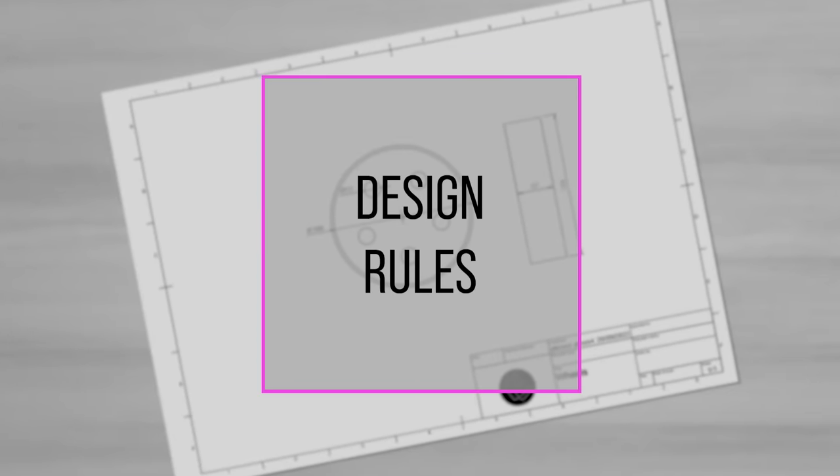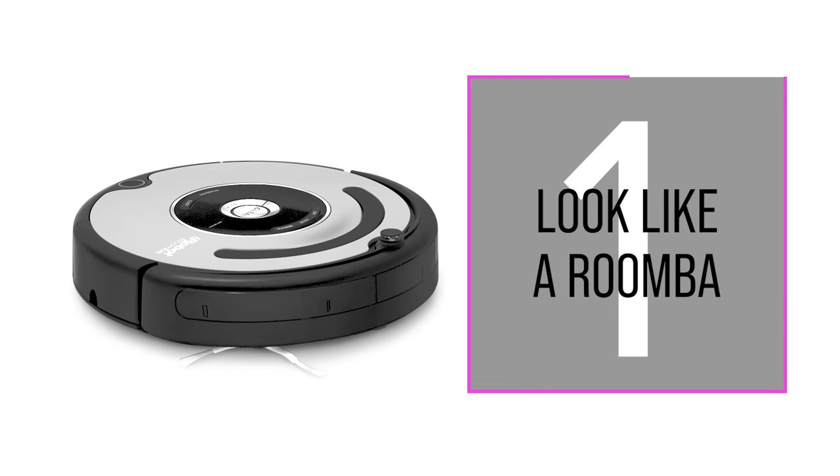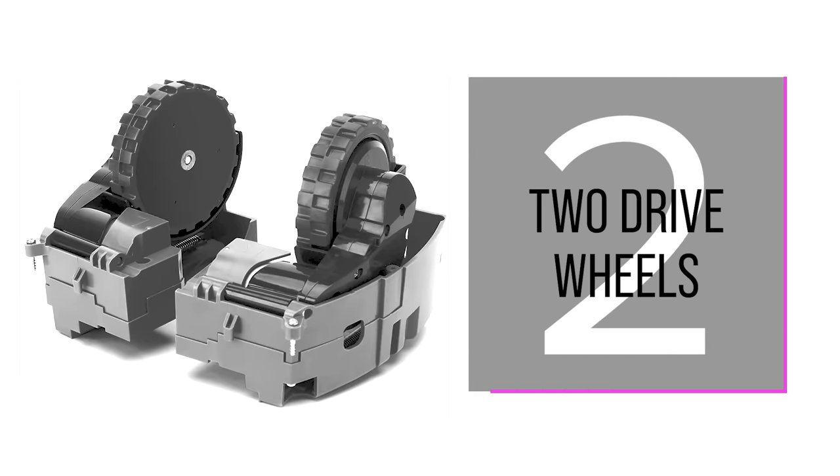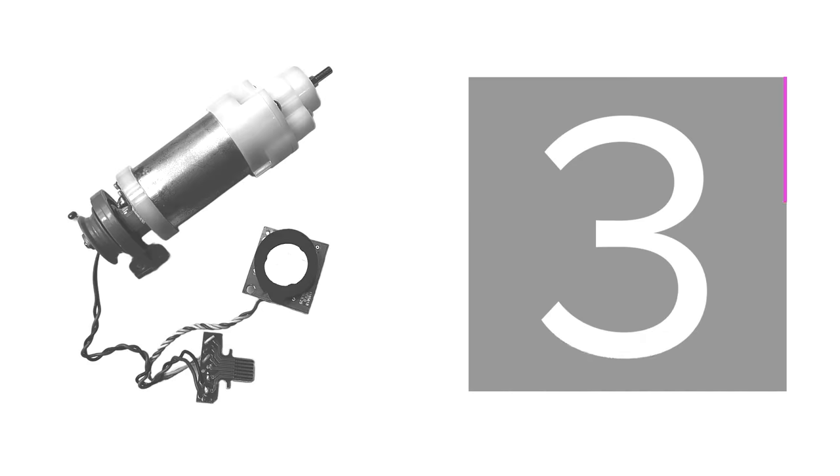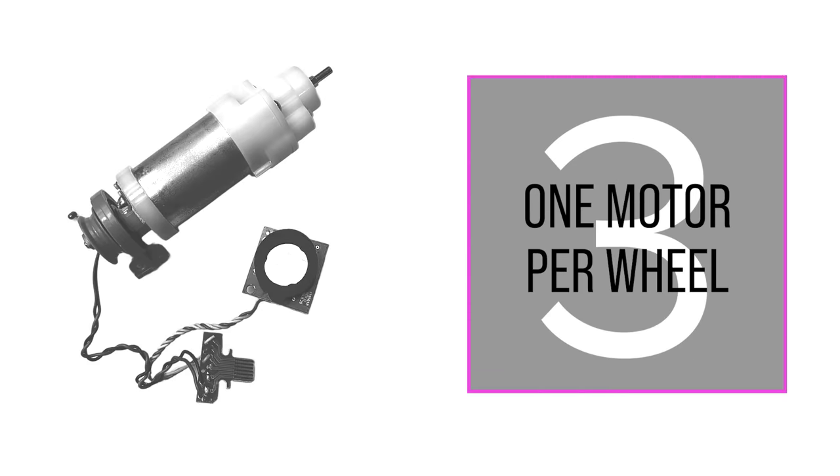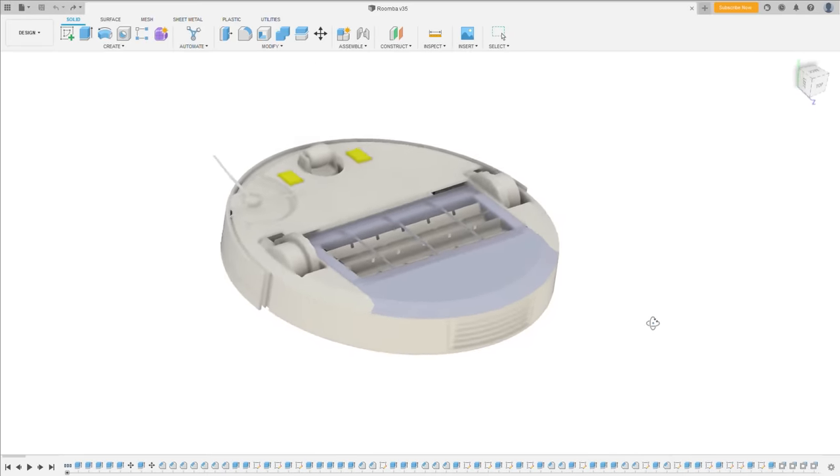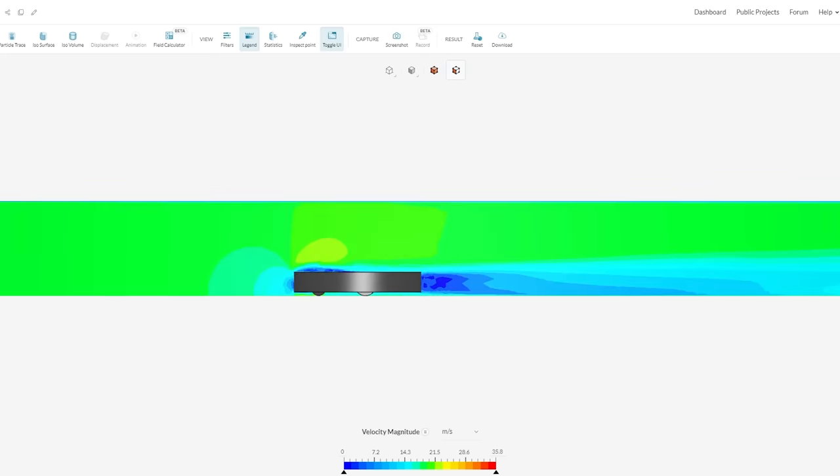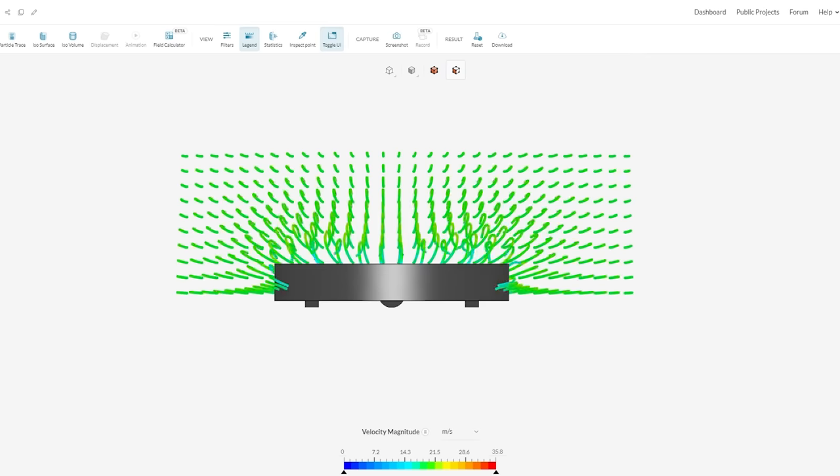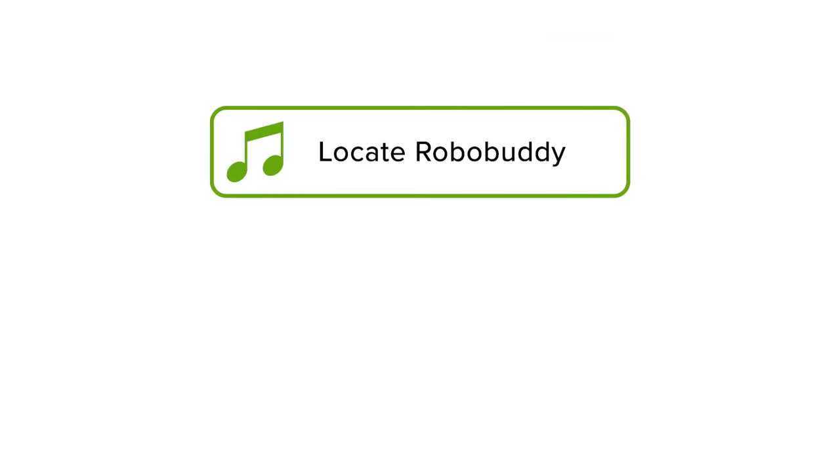And to get there, I'm following these four design rules. It has to look like a Roomba, use two drive wheels with one motor per wheel, and it has to suck. It will be challenging to fit everything inside the cramped Roomba chassis, and their form isn't optimal for aerodynamics or handling.